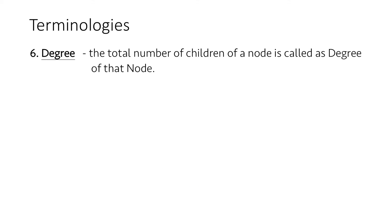Now let's talk about degree. The total number of children of a node is called the degree of that node. The degree of node A is 2 as it has two children, B and C.